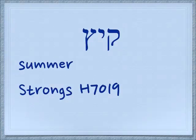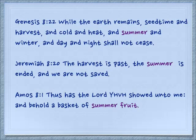Another word associated with these two letters is 'kayetz,' which means summer, and summer is the end of the harvest season. Genesis 8:22 — while the earth remains, seed time and harvest, and cold and heat, and summer and winter, and day and night shall not cease. Jeremiah 8:20 — the harvest is past, the summer is ended, and we are not saved.